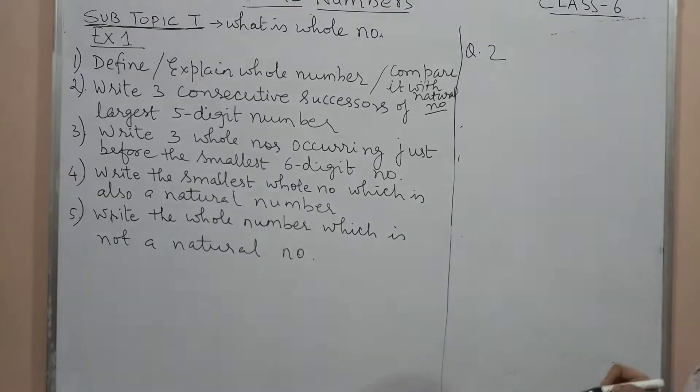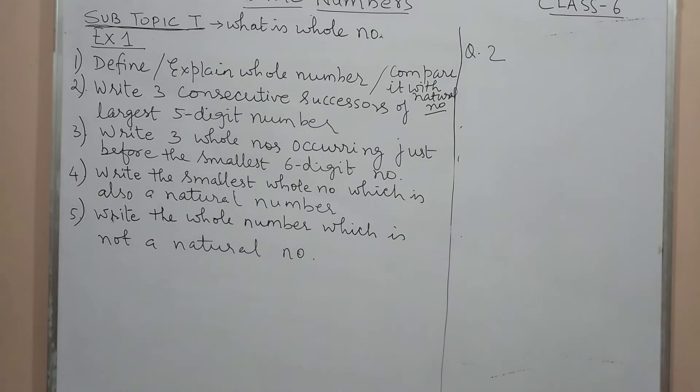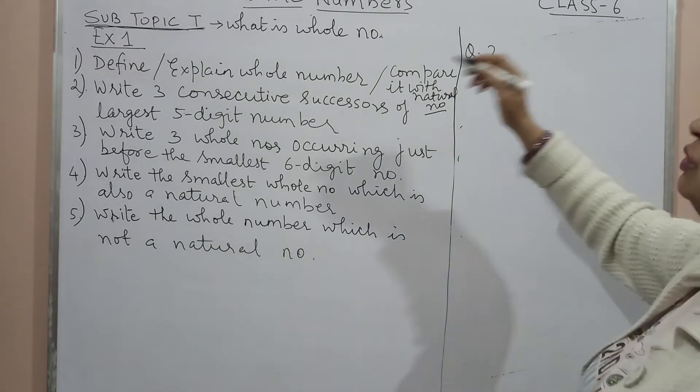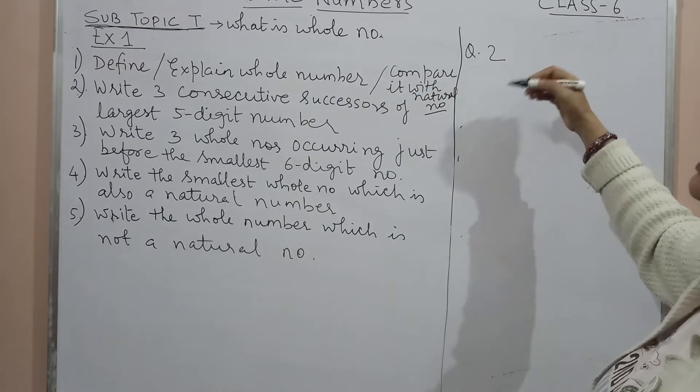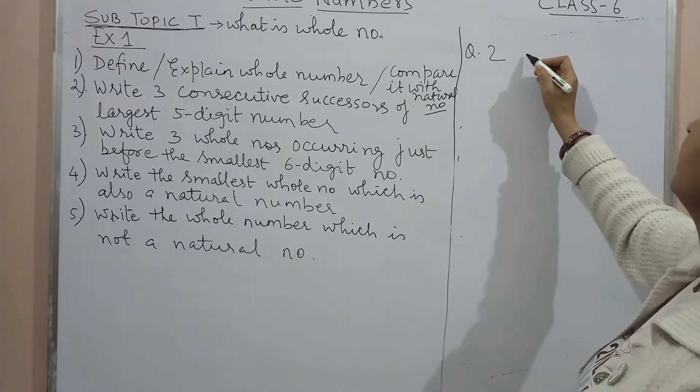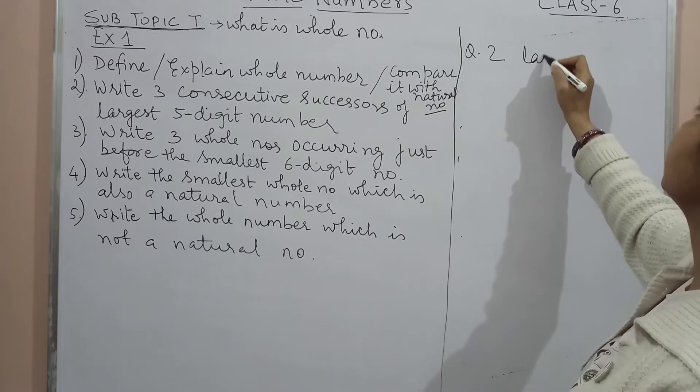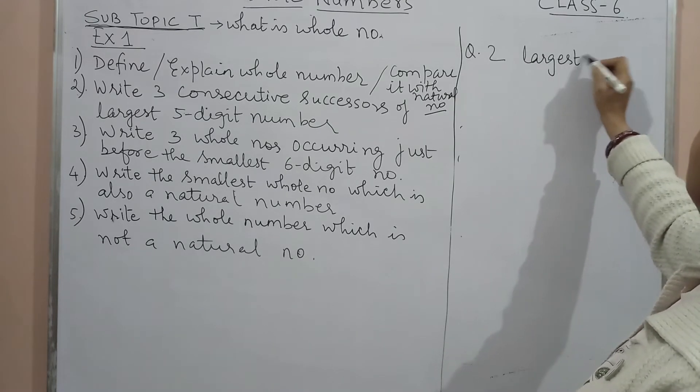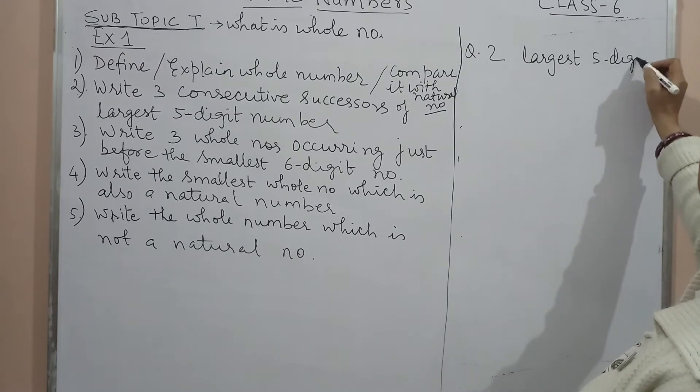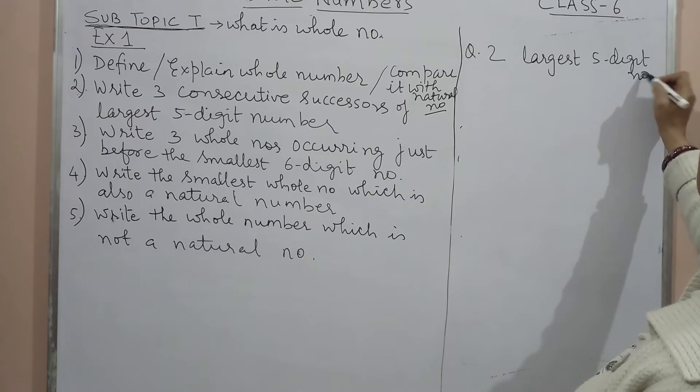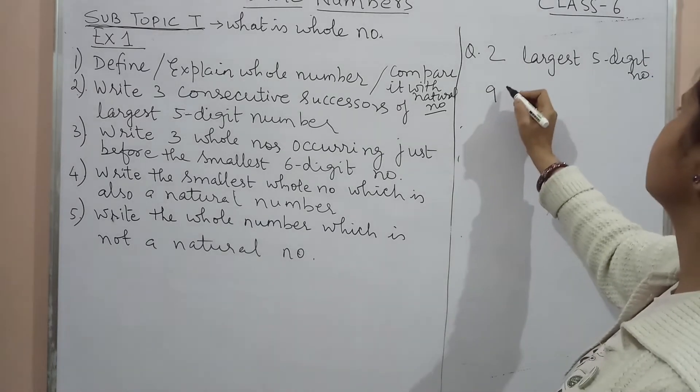Question number two. Now these are very simple, small questions which will just help you to, if you do this small exercise, it will help you to make more clarity with the topic. Question number two: write three consecutive successors of largest five-digit number. Largest five-digit number.